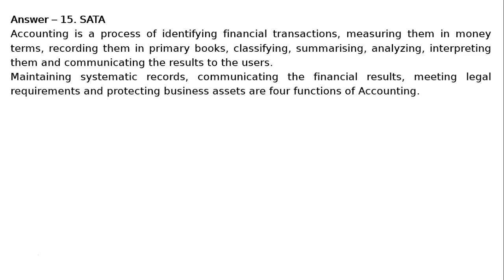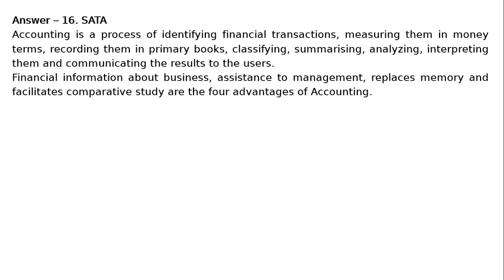Question 16: What do we mean by accounting? Explain any four advantages of accounting. Answer 16: Accounting is a process of identifying financial transactions, measuring them in money terms, recording them in primary books, classifying, summarizing, analyzing, interpreting them and communicating the results to the users. Four advantages: financial information about business, assistance to management, replaces memory and facilitates comparative study.